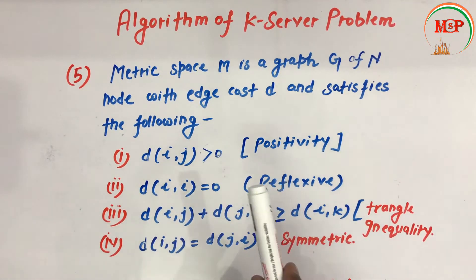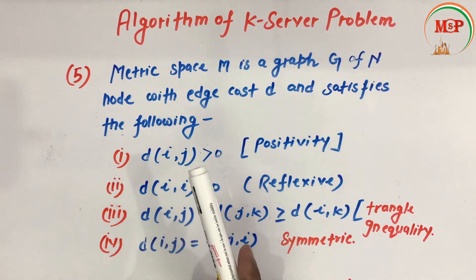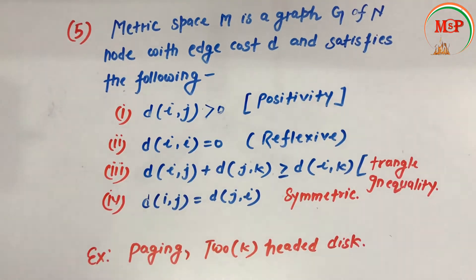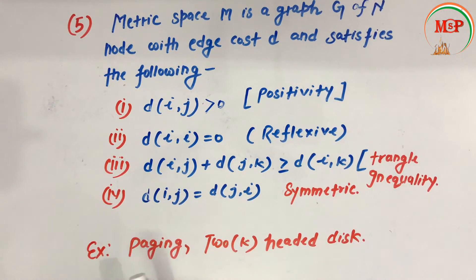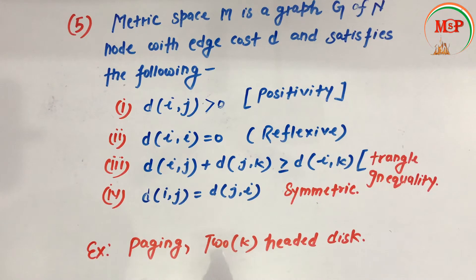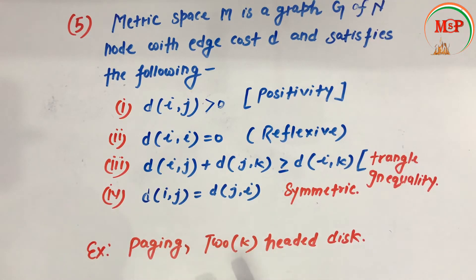These are the conditions satisfied by the k-server problem. Now let's see examples of the k-server problem. The first example is paging — the same paging concept from operating systems, though the terminology is slightly different. The second example is two or k-headed disk, meaning a disk with two or k read heads, where multiple requests arrive and different heads handle different requests.